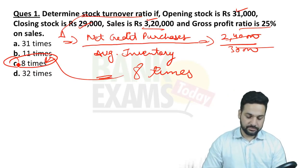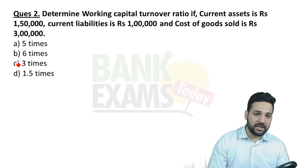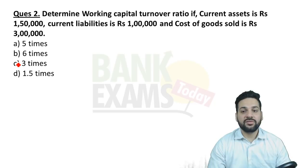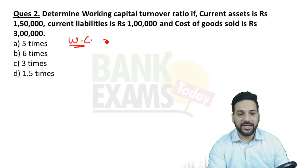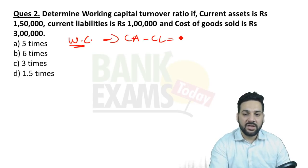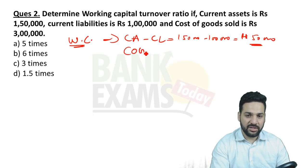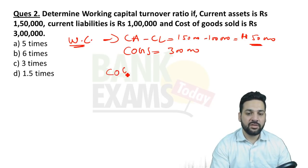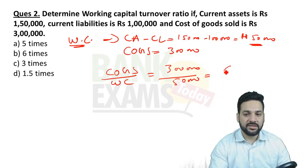Let's try the second question: determine the working capital turnover ratio if current assets = 1,50,000, current liabilities = 1,00,000, and cost of goods sold = 3,00,000. Working capital = current assets minus current liabilities = 1,50,000 minus 1,00,000 = 50,000. The working capital turnover ratio = COGS divided by working capital = 3,00,000 divided by 50,000 = 6 times. The answer is B.